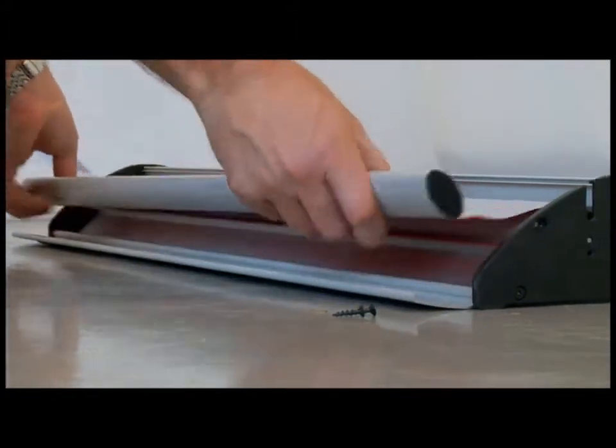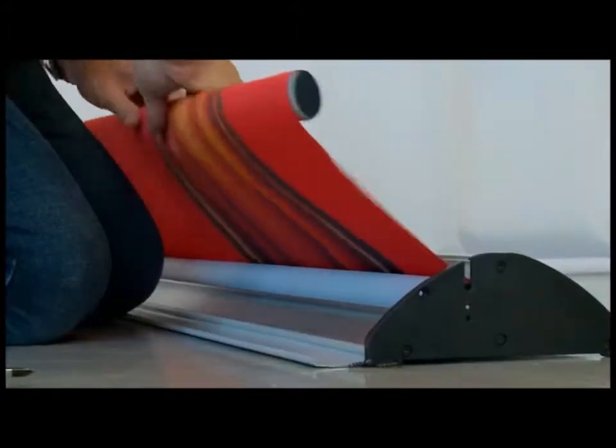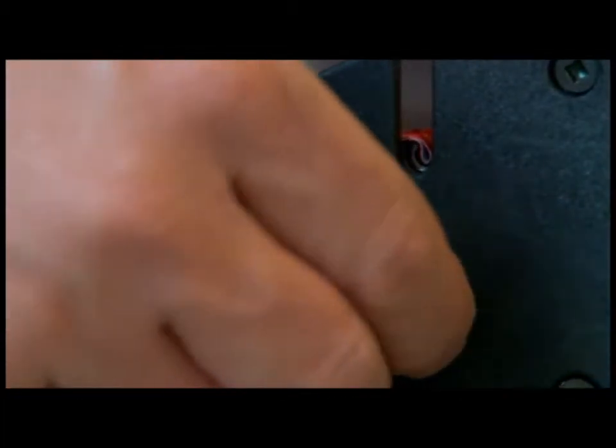Unroll the whole banner onto the top roller until you can see the spring-loaded bottom roller. Align the groove on the bottom roller with the gap on the side of the base.